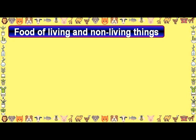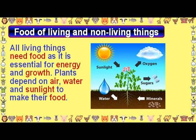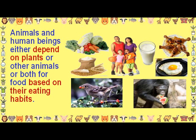Food of living and non-living things. All living things need food as it is essential for energy and growth. Plants depend on air, water, and sunlight to make their food. Animals and human beings either depend on plants or other animals, or both, for food based on their eating habits.